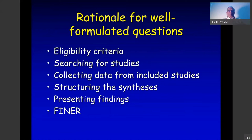When selecting a question for review it may be good to remember FINER. F stands for Feasibility, I for Interesting — is it interesting to you, N for Novel — something new should be there, E for Ethical, and R for Relevance. You have to have a question which meets most of these criteria; some may be more important than others.